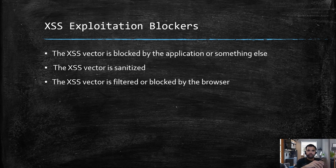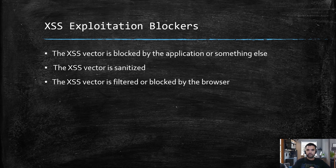Now we are going to talk about some payloads, and I want to start with the script tag payload. Suppose you have been tasked to do pen testing and you want to find cross-site scripting in an application — you will start with the script tag, that's very basic. So what we will see today is some variants of the script tag which you can use to detect if cross-site scripting is possible.